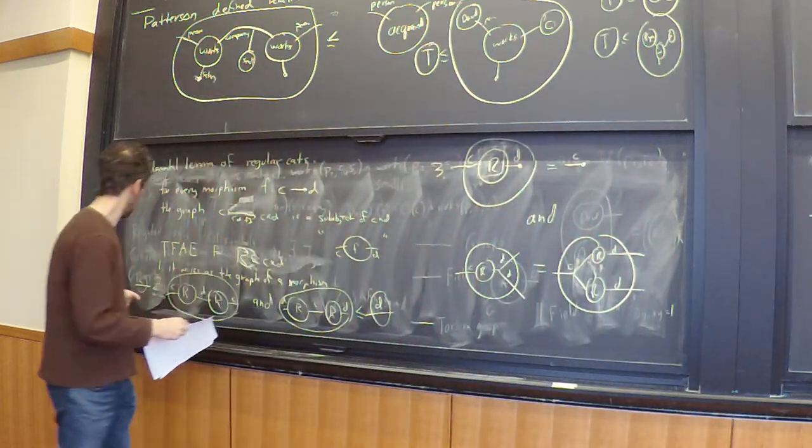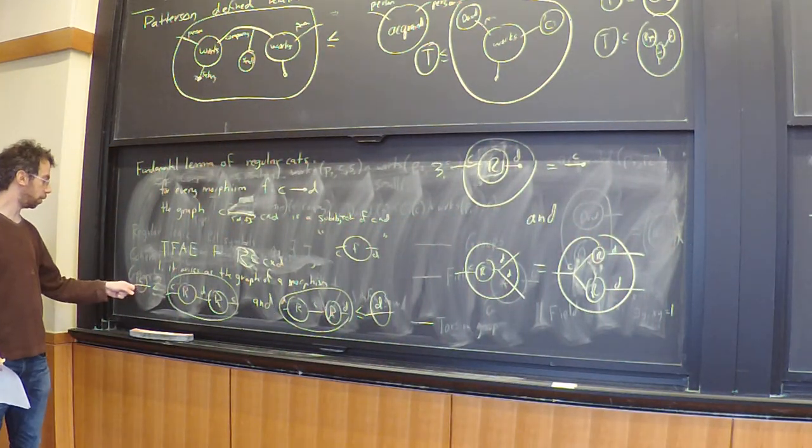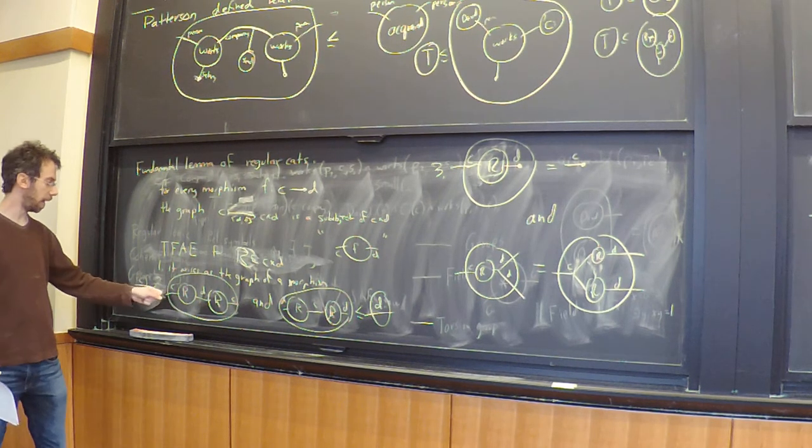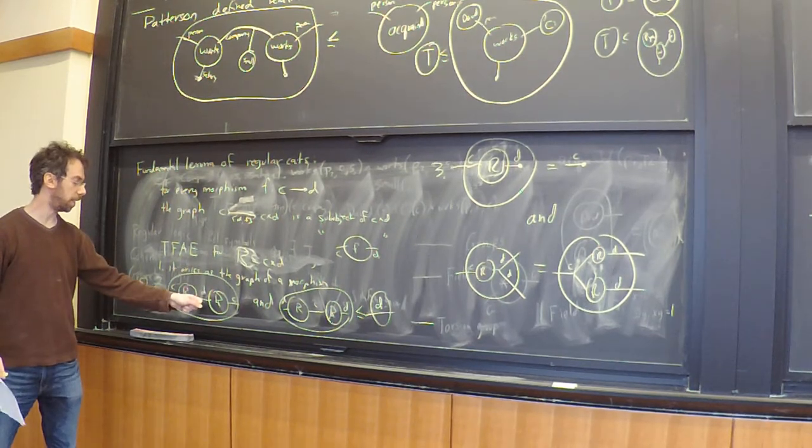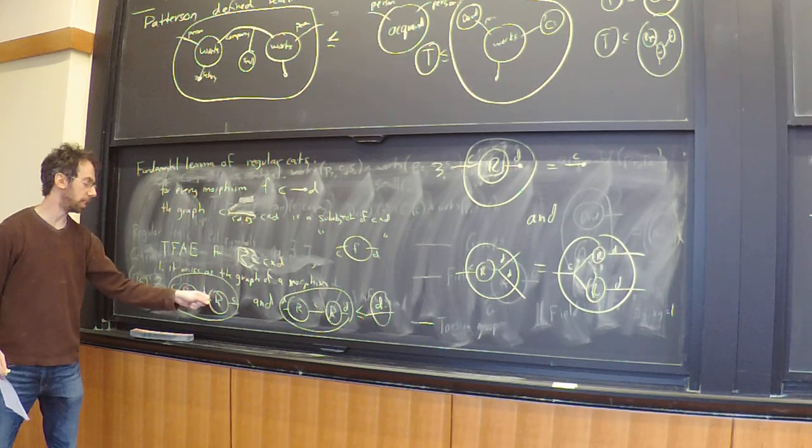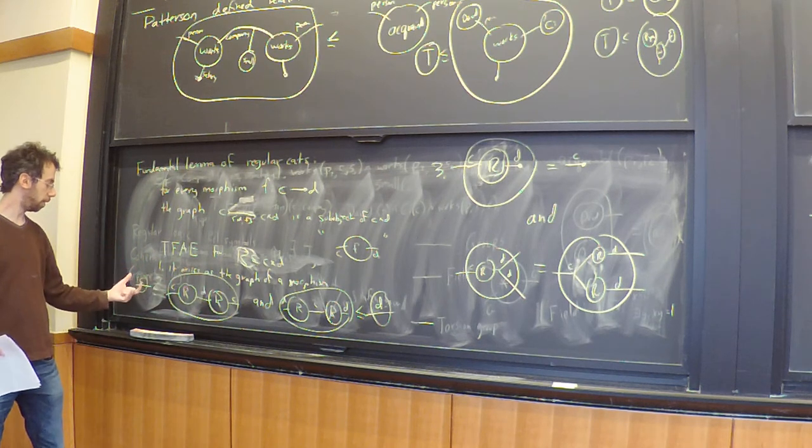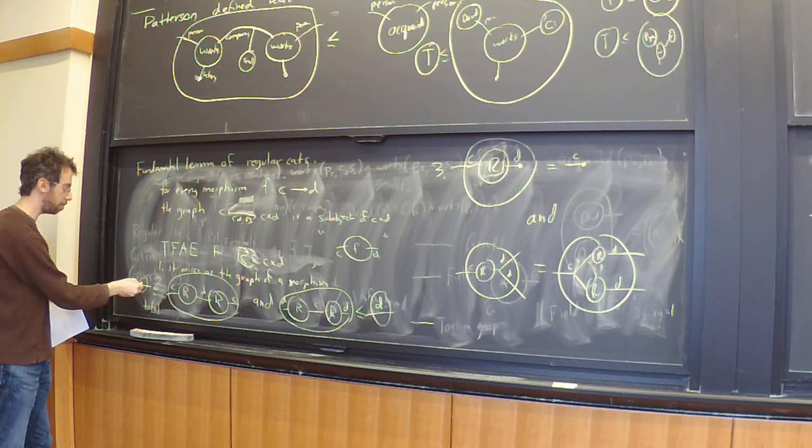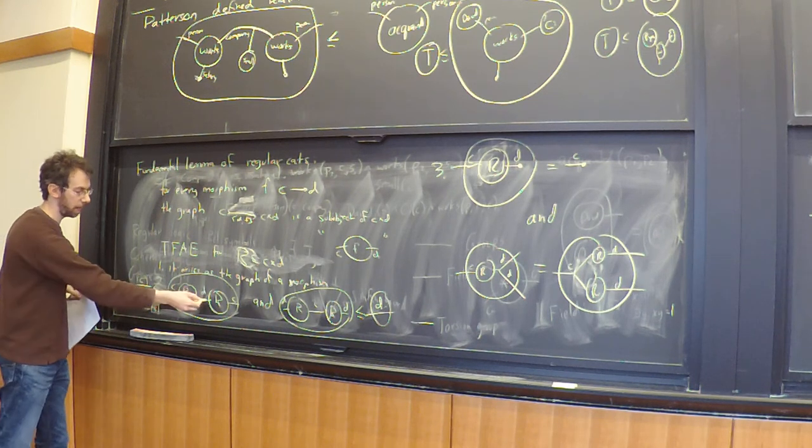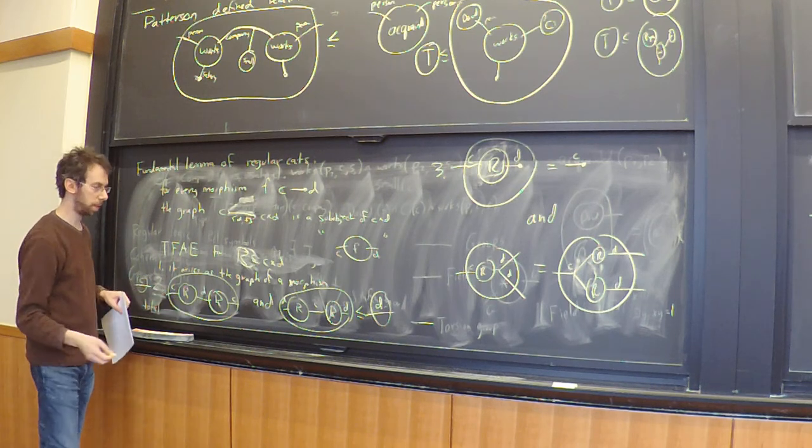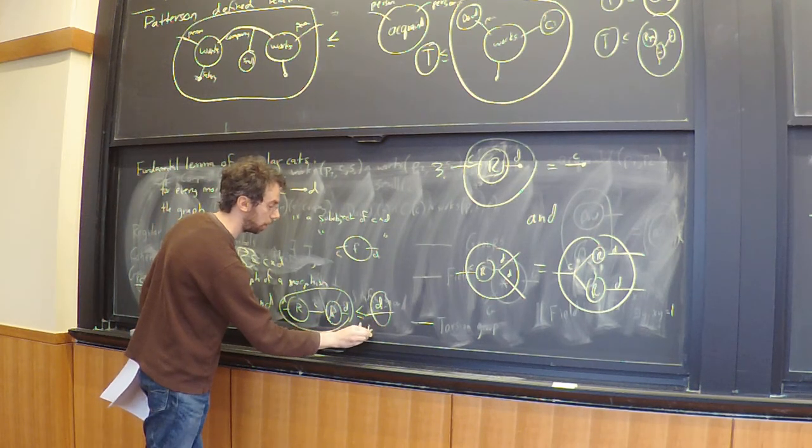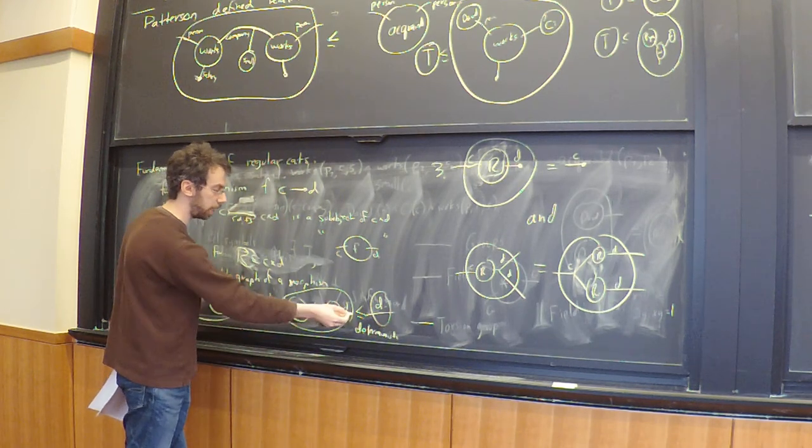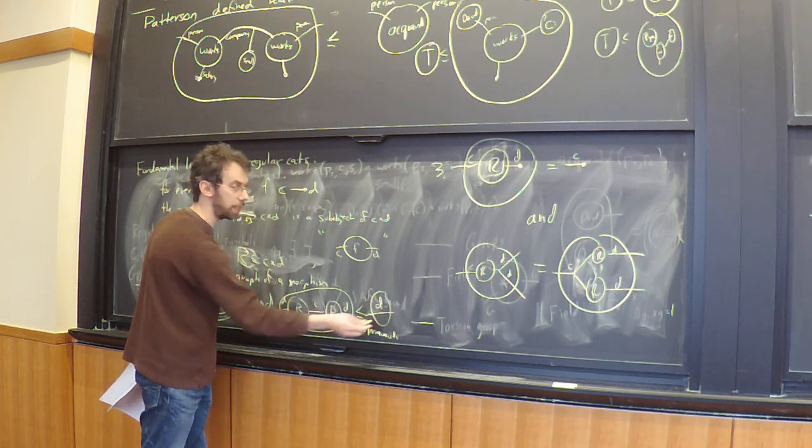What this one says is: if you have two things, if you have c twice, that's the same thing as a c that's sent by my function to d and another c that's sent by my function to d. This basically says total—every element of c hits some d under the relation. And this guy says deterministic: it says that if f of c is d and f of c is some other d prime, then the d and the d prime are the same.